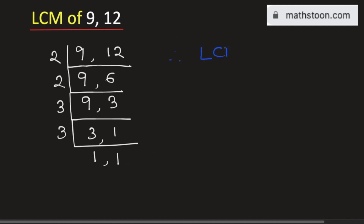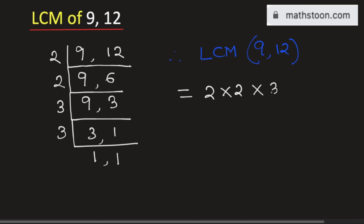So the LCM of 9 and 12 will be equal to the product of the numbers on the left hand side. That is, it is equal to 2 times 2 times 3 times 3, and multiplying we will get 36. So 36 is the LCM of 9 and 12, and this is our final answer. Thank you for watching.